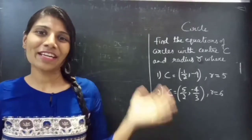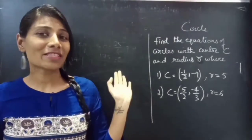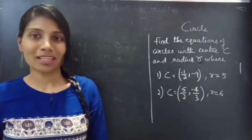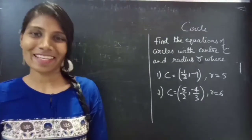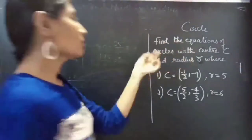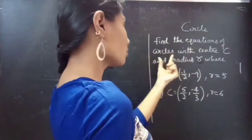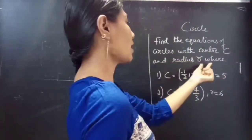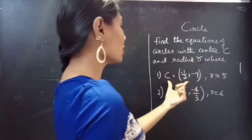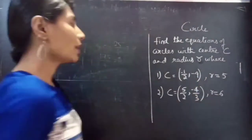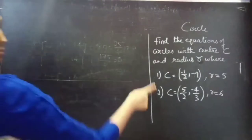Hello everyone, this is Vikalpana here. In this video we are going to see two problems from circles. So let's get started. Problem 5: the equations of circles with center C and radius R. Here we are given the center and radius and we are asked to find the equations of these circles.